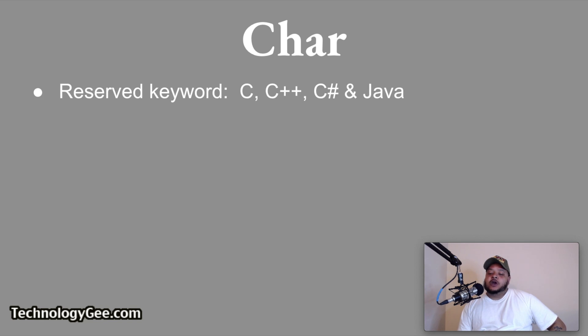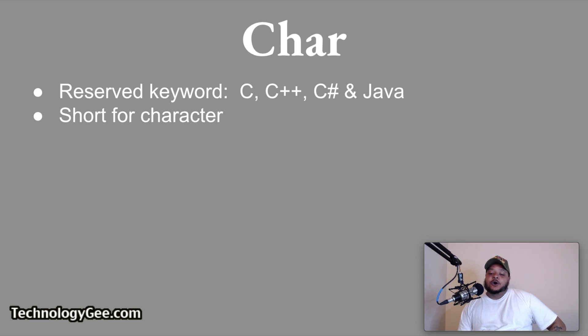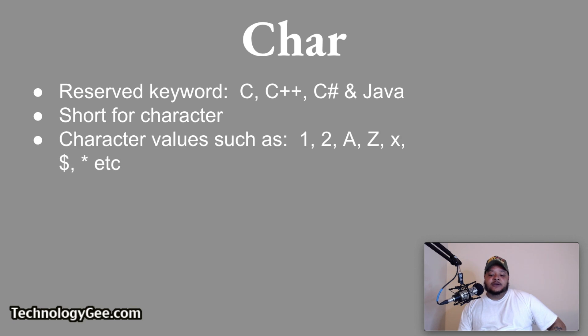So char — the abbreviation char is used as a reserved keyword in some programming languages such as C, C++, C sharp, and Java. Char is short for character, which is a data type that holds one character of data, which could be expressed as a letter, number, et cetera. The value of a char variable could be any one character value such as 1, 2, A, X, Z, the dollar sign, the asterisk, et cetera. So that is what the term char refers to.